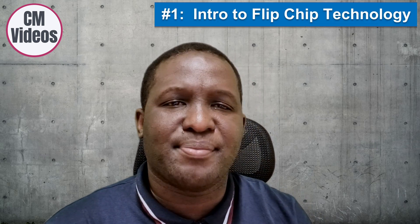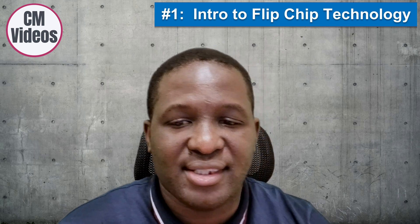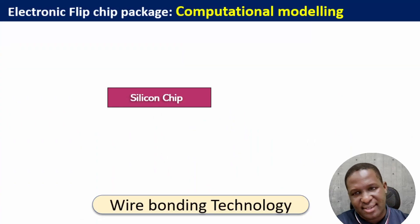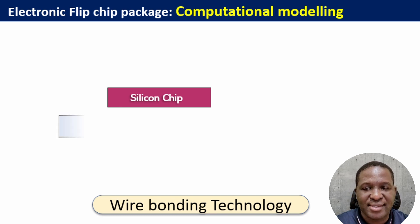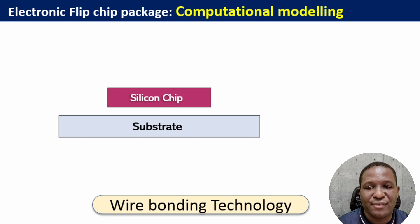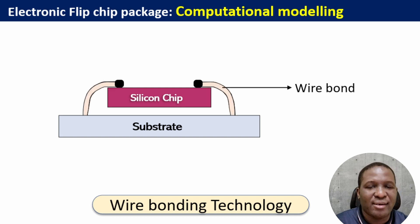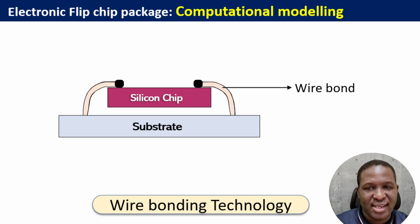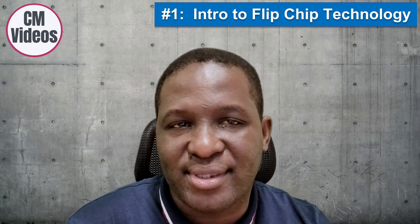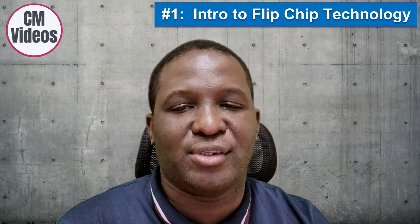The first electronic flip package design we want to look at has been around for quite a long time — it's one of the oldest technologies and it's called wire bonding technology. Consider this is a silicon chip, which is typically the microchip where all the electrical activity is taking place. It needs to be attached to a substrate, which then connects to the PCB of the device. The easier way is to use a wire to bind the top of the silicon to the substrate, and then to make effective connection and heat exchange, you introduce a copper tab.